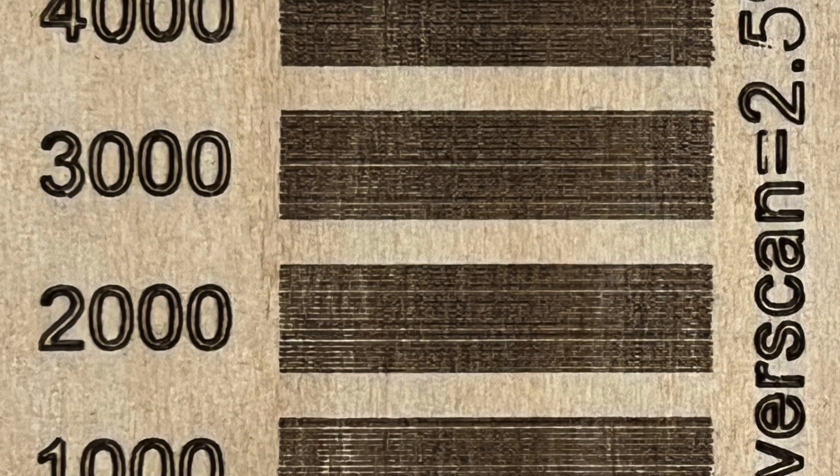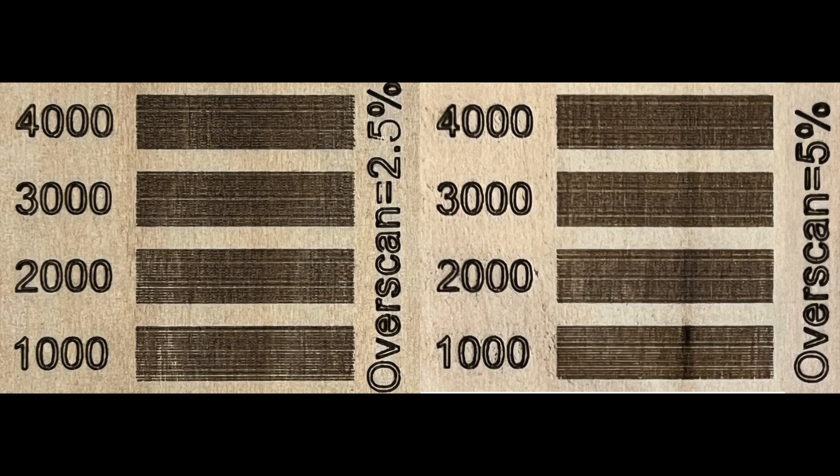If I compare the results of 2.5% and 5% over-scanning, I would say I'm more satisfied with 5% - with more consistent engraving intensity on both ends of the lines. Then I would keep 5% for this type of material.